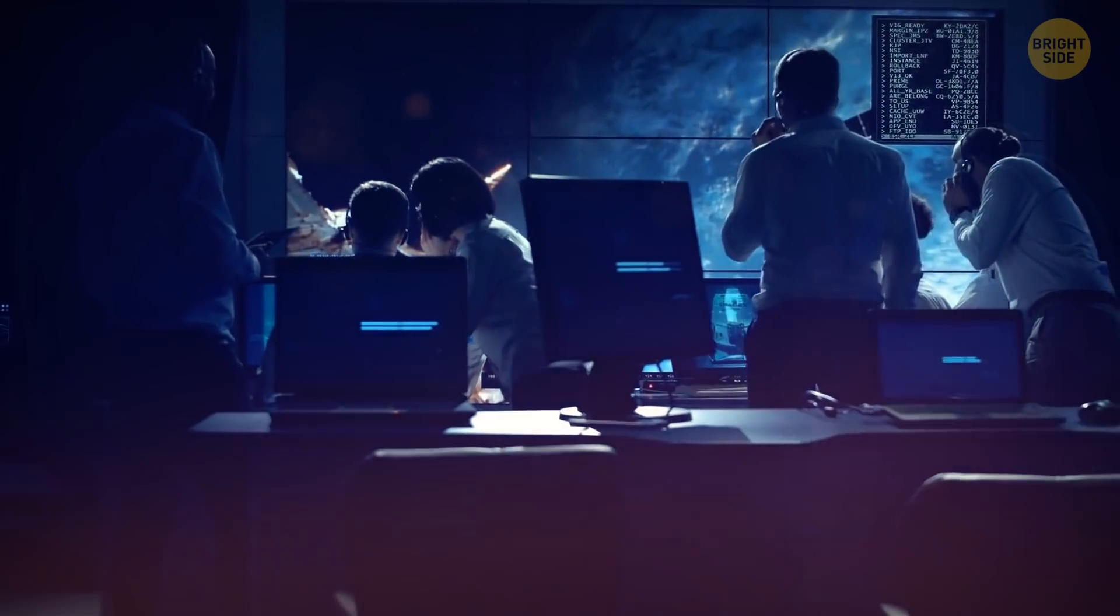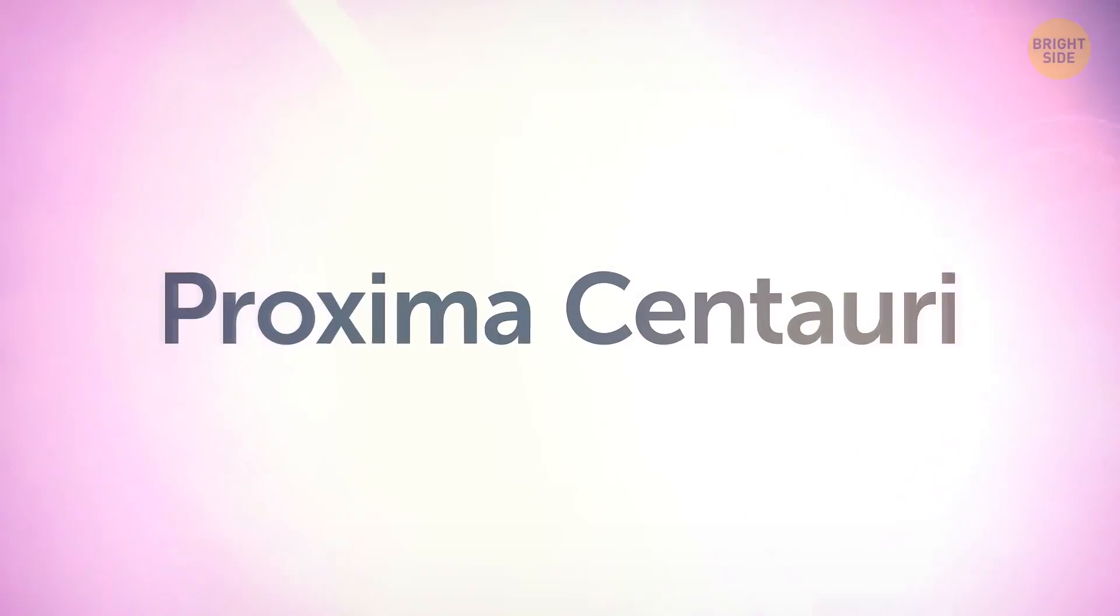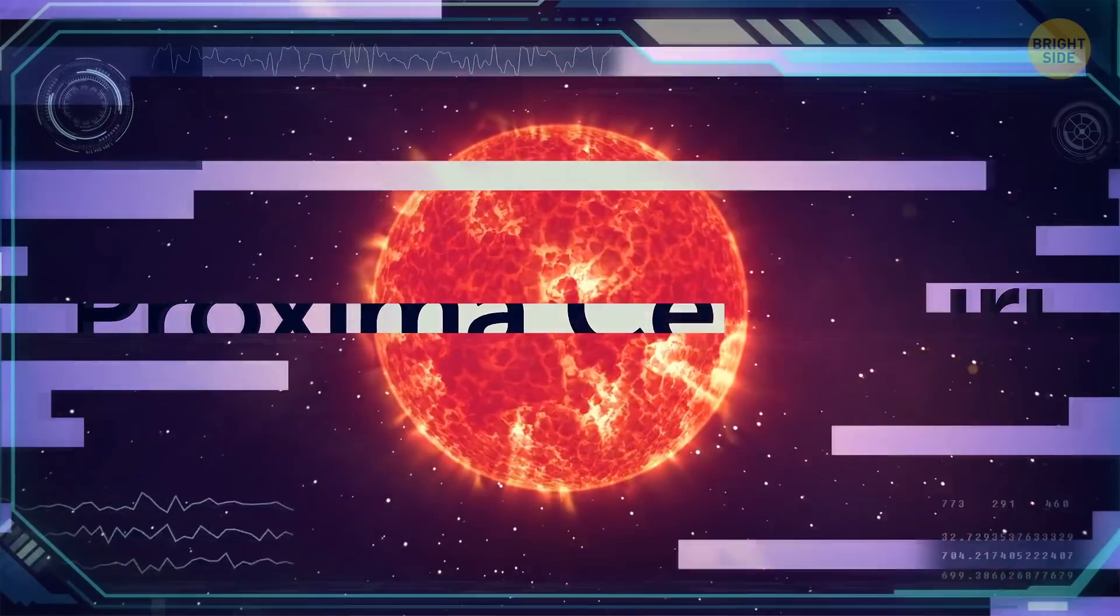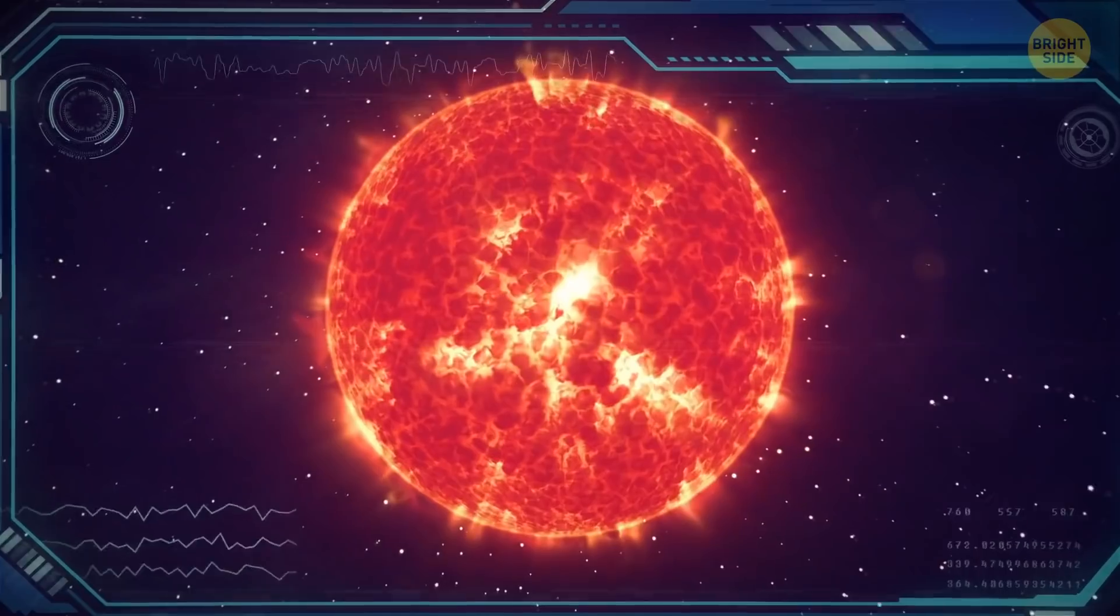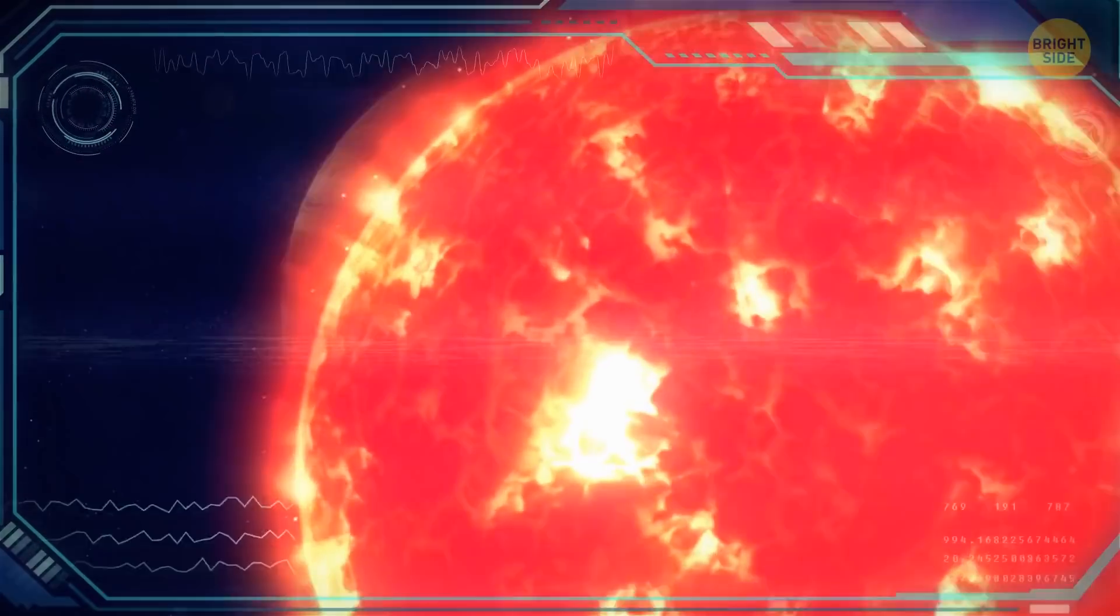People managed to detect them not so long ago in a star system very close to our home. It's Proxima Centauri. This red dwarf star is the closest to our solar system. It's seven times smaller than our Sun, which makes it only 50% bigger than Jupiter.